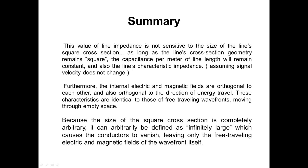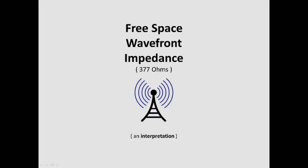Because the size of the square cross-section is completely arbitrary, it can arbitrarily be defined as infinitely large, which causes the conductors to vanish, leaving only the free-traveling electric and magnetic fields of the wavefront itself. At this point, this video would normally end having explained the transmission line model as an explanation of Maxwell's wavefront impedance. But there is still a little more useful knowledge remaining to be gleaned from it.